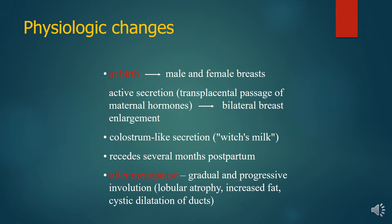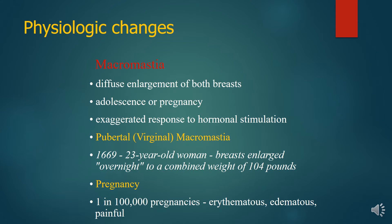After menopause, there is a gradual and progressive involution — lobular atrophy, increased fat, and cystic dilation of the ducts. Macromastia is a diffuse enlargement of both breasts in adolescence or pregnancy, representing an exaggerated response to hormonal stimulation. In pregnancy, in one in a hundred thousand pregnancies, there is an erythematous, edematous, and painful presentation.